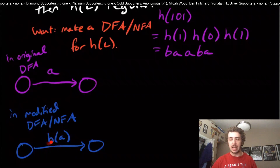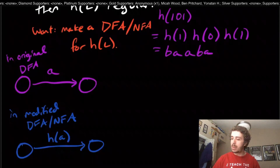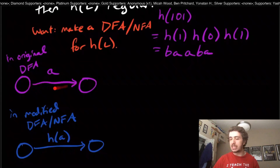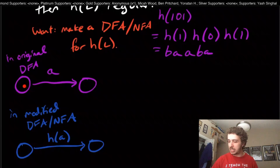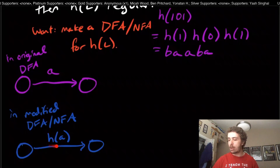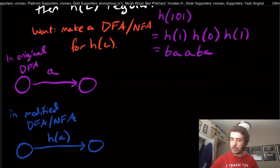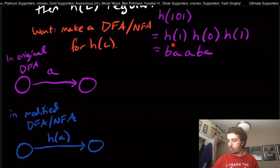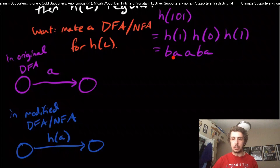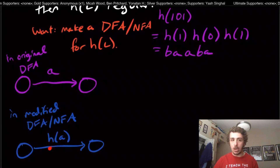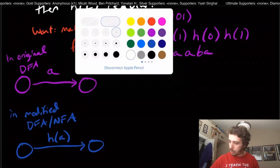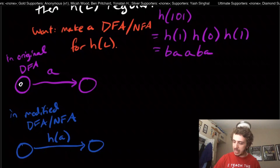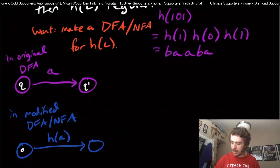In the modified machine, we'd want to see H(a) on the transition, because the homomorphism property says you can break up the string into each individual character and apply H to each. But the main problem is that the result of H could be an entire string, and you can't have an entire string on a single transition. There is an easy way to fix this, though.